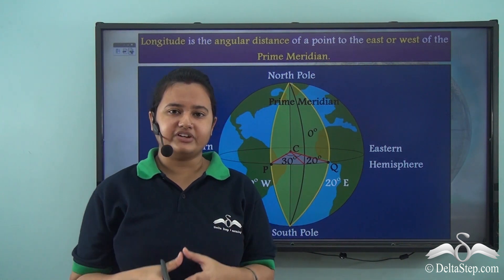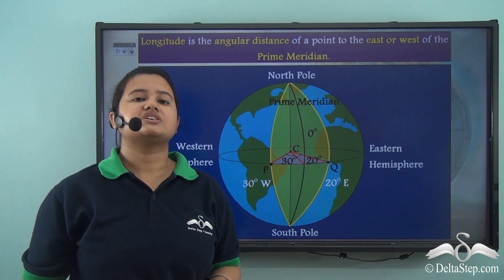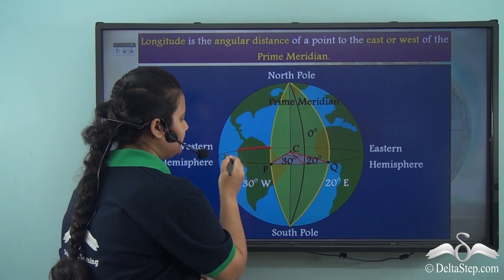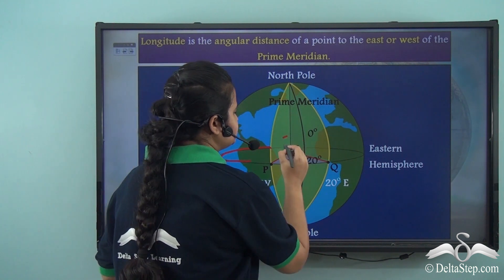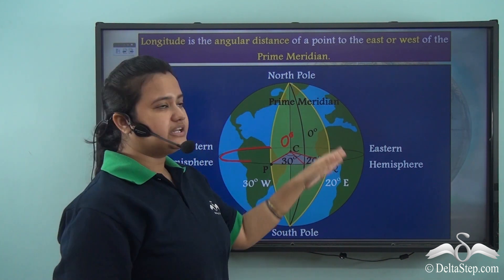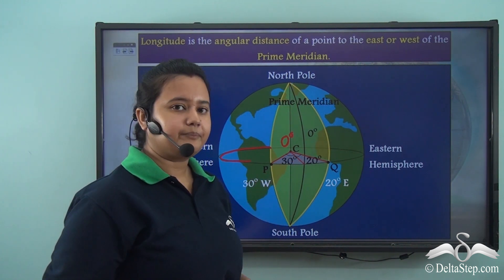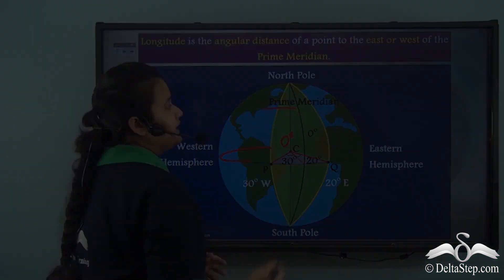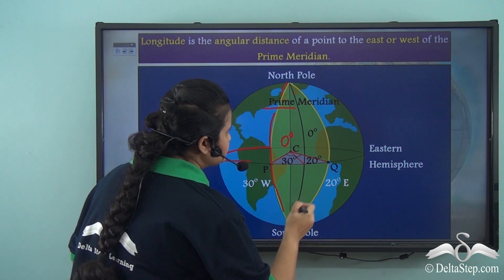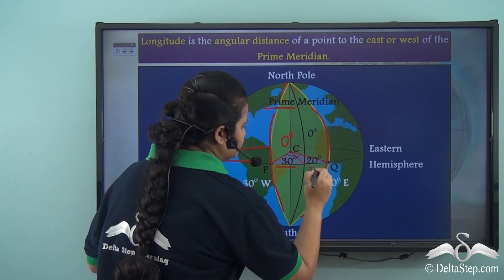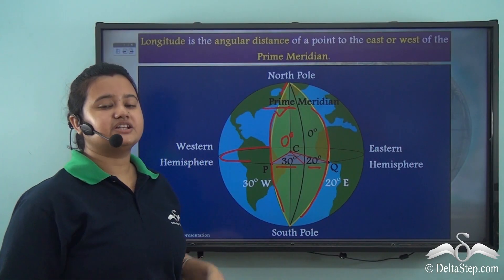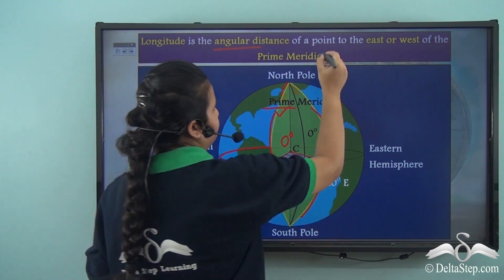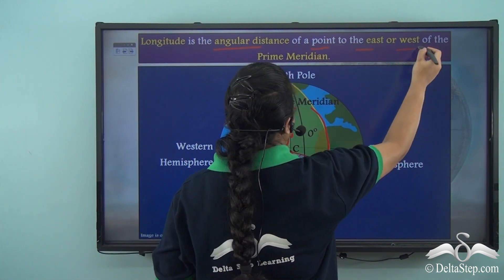In the previous video we understood how the longitudes are drawn. Prime Meridian is the longitude that lies on the orbital plane or it makes an angle of 0 degree with the orbital plane. Prime meridian is the 0 degree line of longitude. All the other lines of longitudes are drawn with respect to this prime meridian. These lines of longitudes make some angle with the prime meridian. This gives the true definition of longitudes. What are longitudes? Longitudes are angular distance of a point to the east or west of the prime meridian.